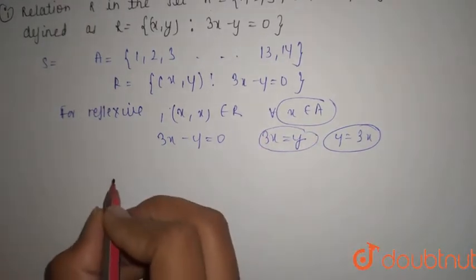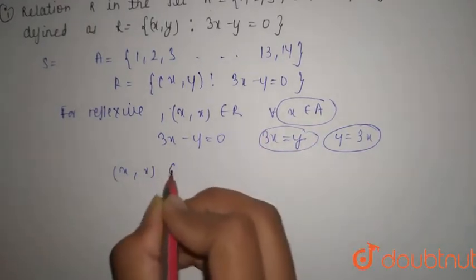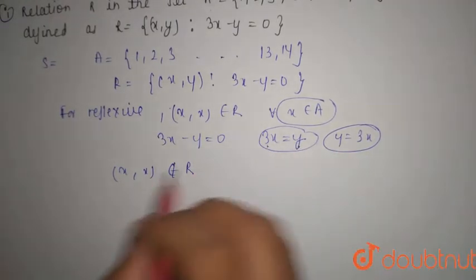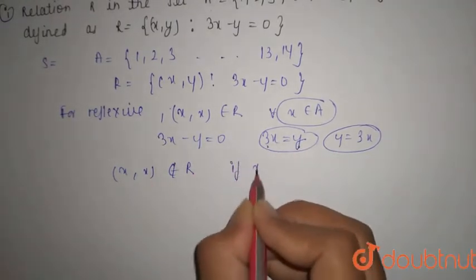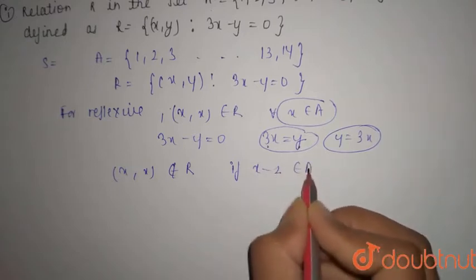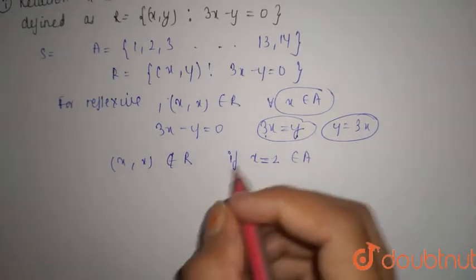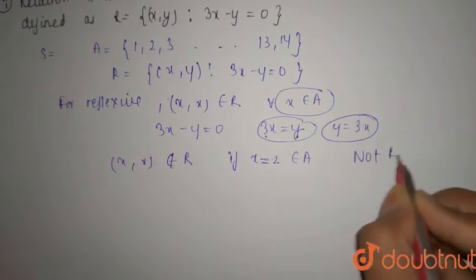Therefore, you have x, x does not belong to R because here it is 3x and it is 1 only. This does not belong to R if x equals 2 that belongs to A. So R is not reflexive.